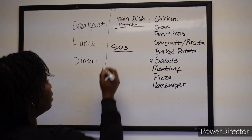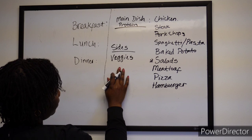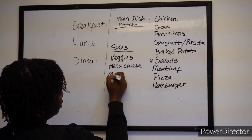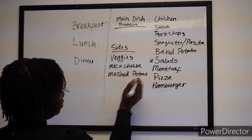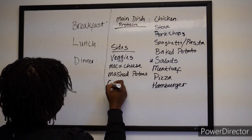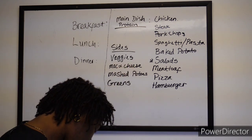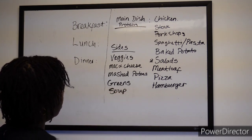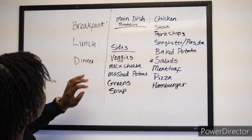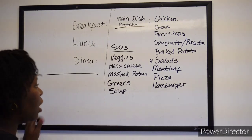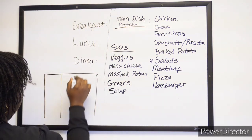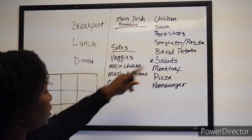For sides, we have veggies, mac and cheese, mashed potatoes, grains, and soup. So make a list of all your veggie sides and all your main dishes or proteins. Then you can print off a blank calendar — that way you have all your lines and grids — and then just randomly pick from your lists and fill it in.